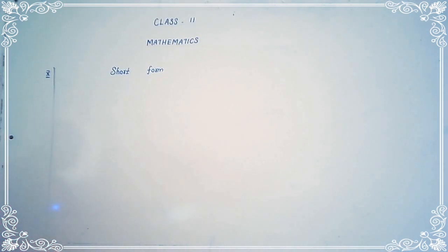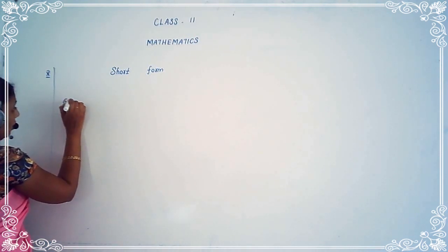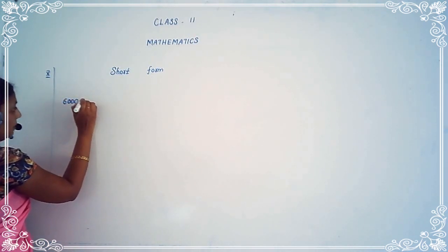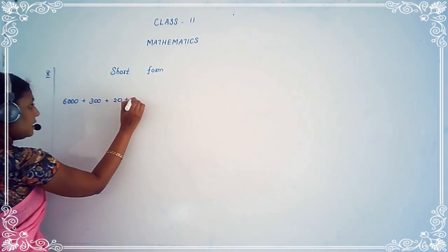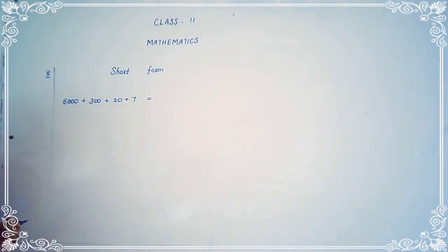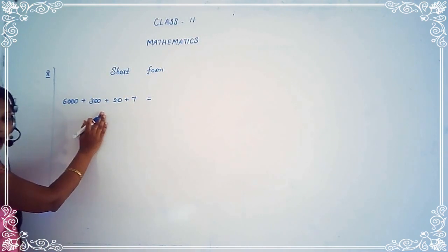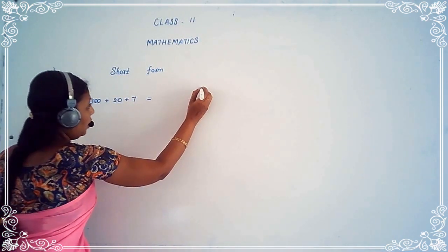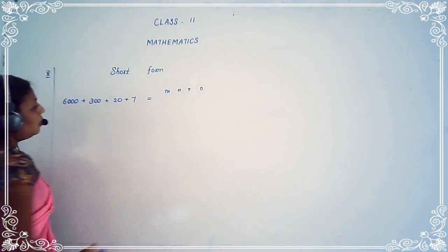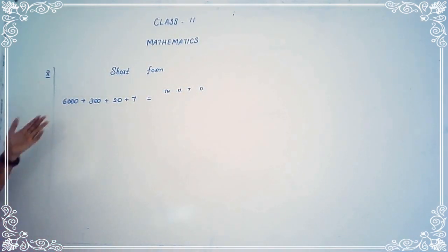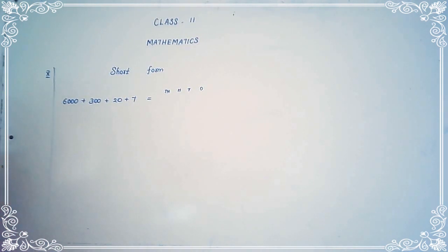Another example: six thousand plus three hundred plus twenty plus seven. Now we have to write in short form. They are given in expanded form. Ones, tens, hundreds, and thousands. How many thousands is here? Six thousand. So six is in the thousands place — write six.